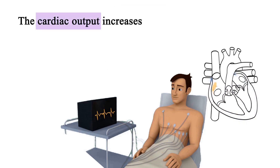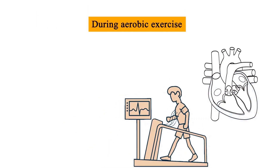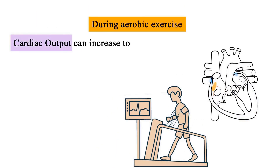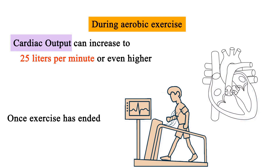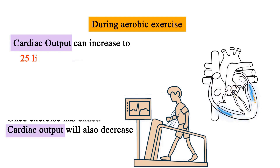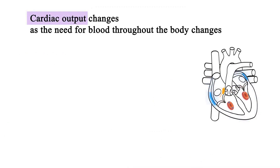The cardiac output increases when the demand for blood flow increases. During aerobic exercise, cardiac output can increase to 25 liters per minute or even higher. Once exercise has ended and the demand for blood flow decreases, cardiac output will also decrease.